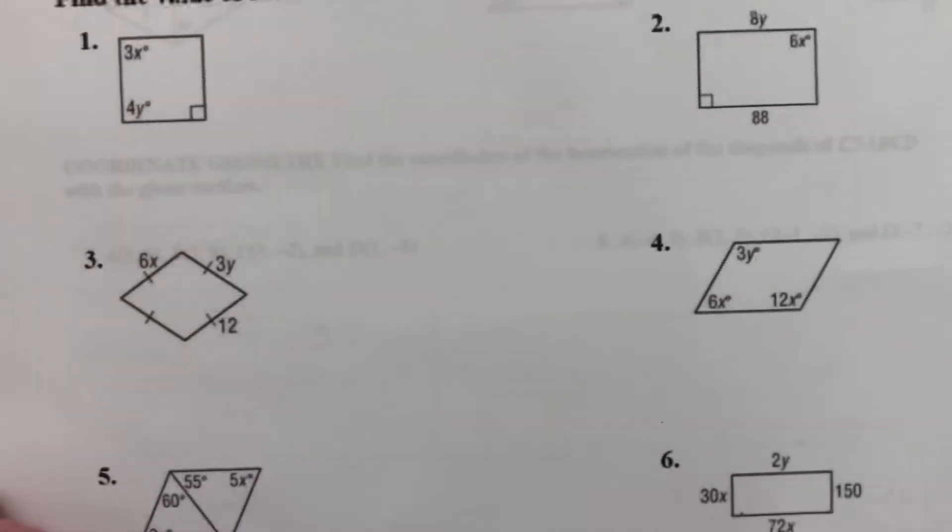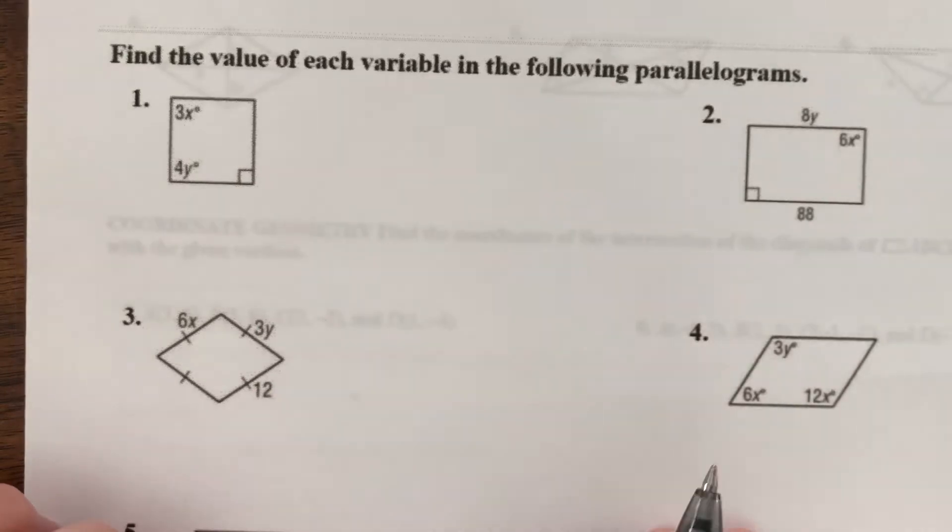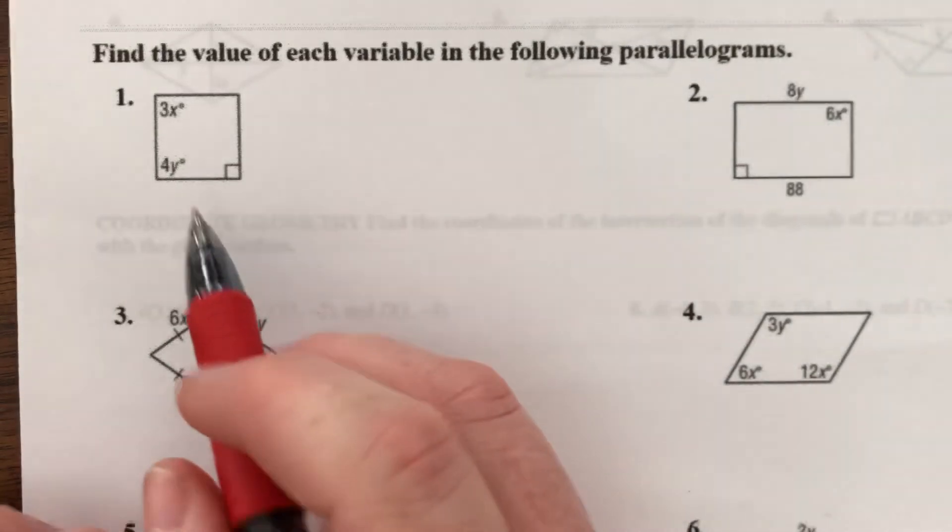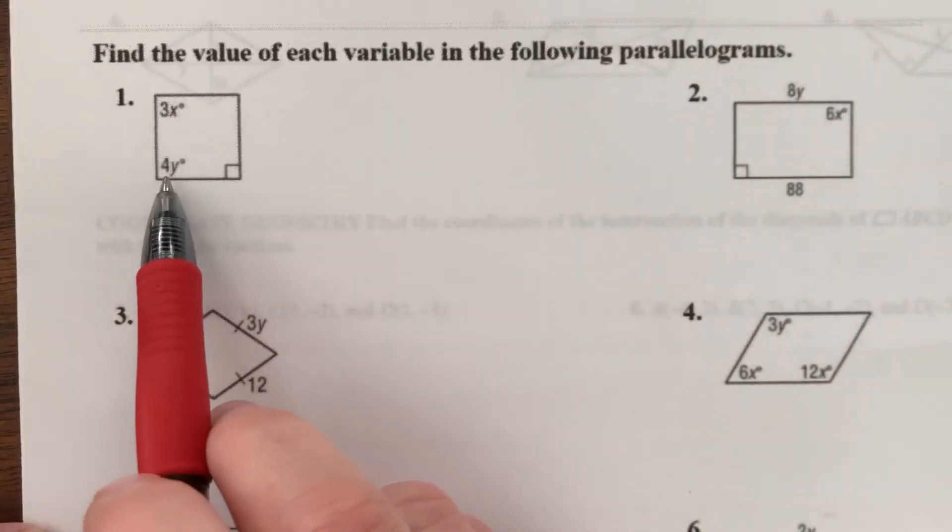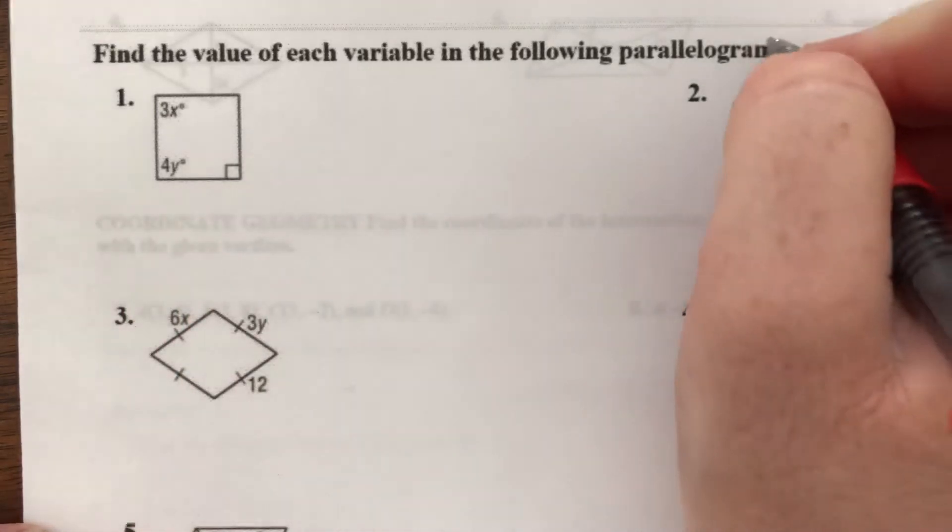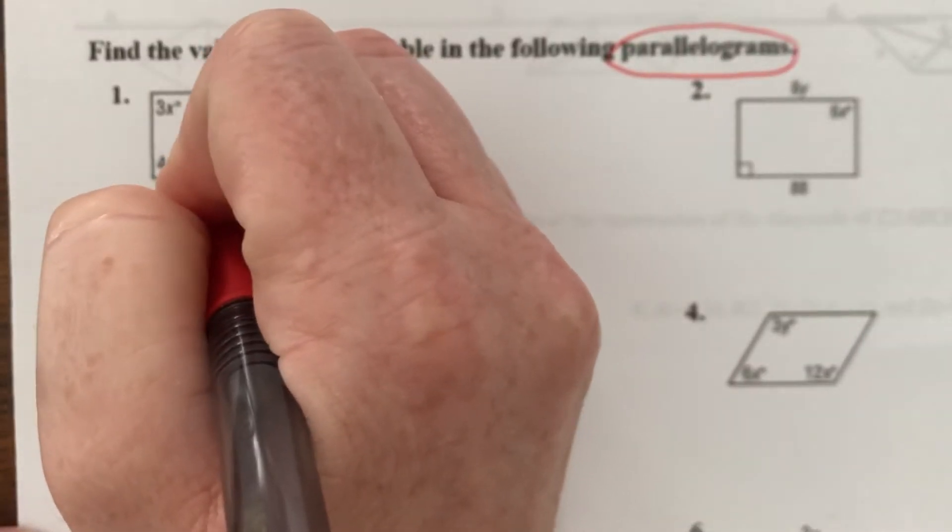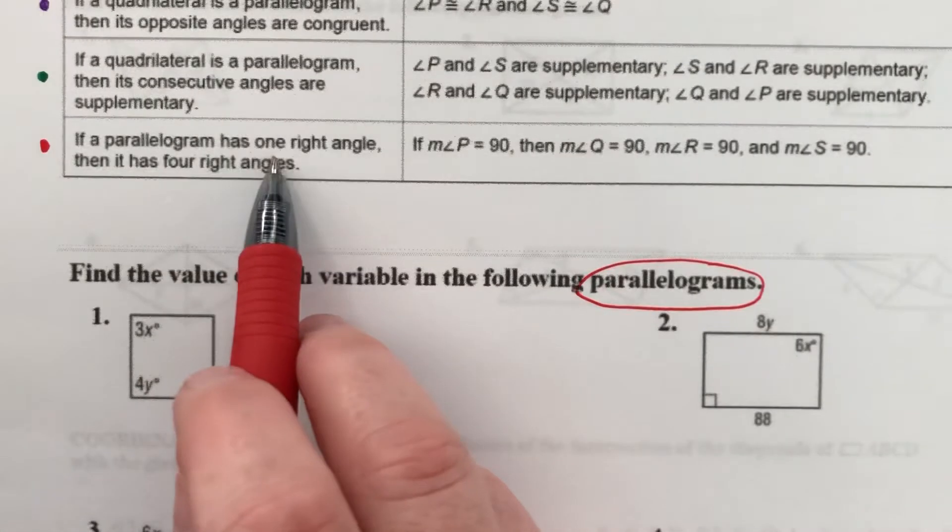All right, so based on those four facts, let's do some math down here. Find the value of each variable in the following parallelograms. 3x, 4y. How do I know what to set those equal to? Well, it says these are all parallelograms, and it shows me that one of the angles is 90.